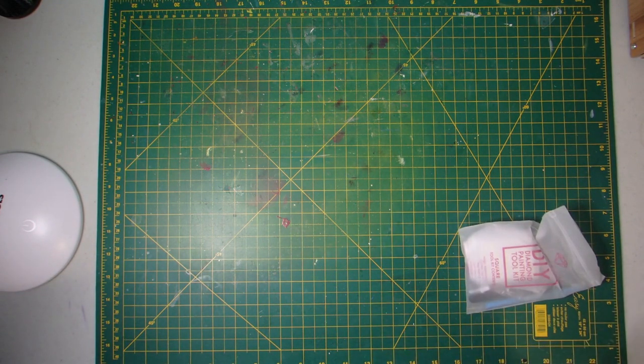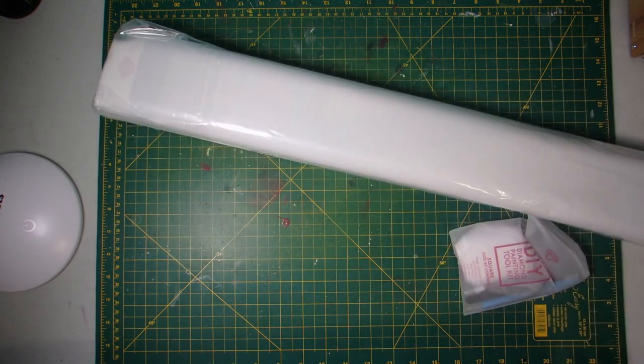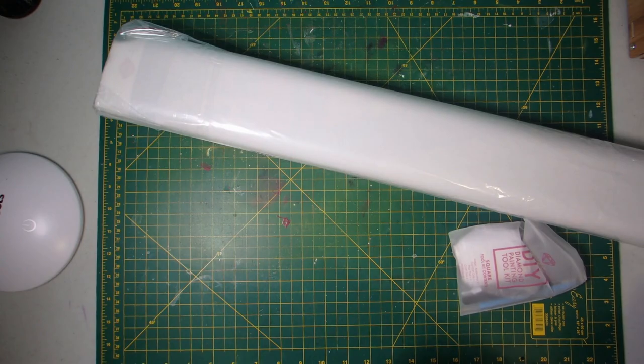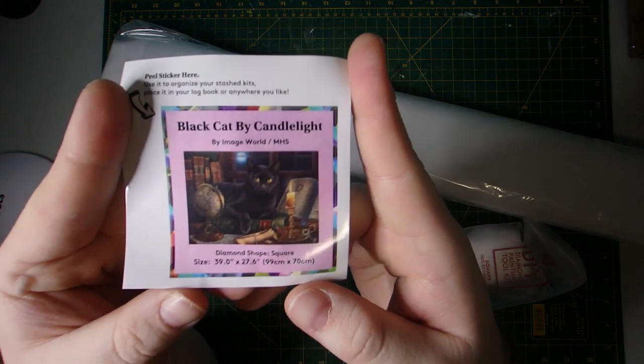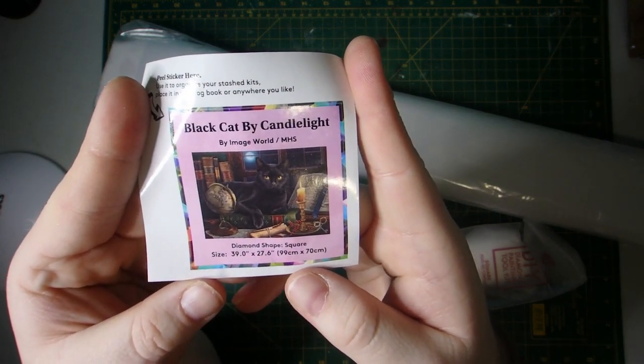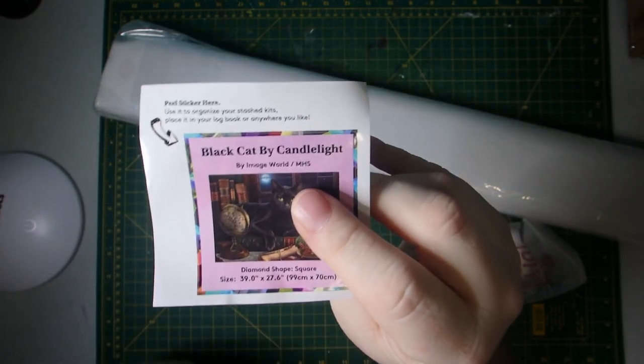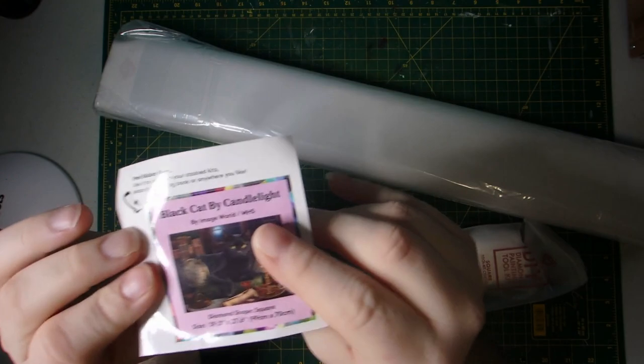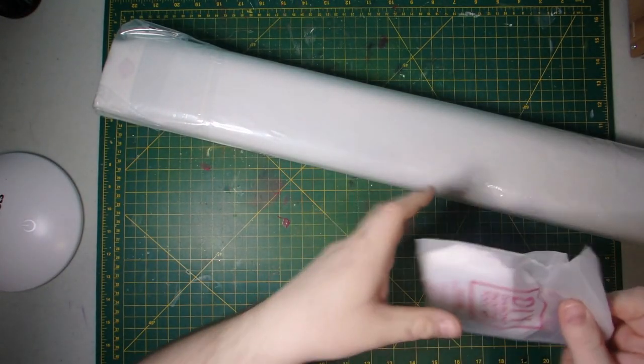We have a runaway sticker and this is a beast of a canvas. Here's the little sticker and it has the artwork name, who it's by, the diamond shape and canvas size. This sticker is great for helping you organize your stash or putting it in your log book, whatever use you determine.